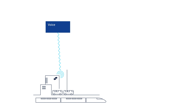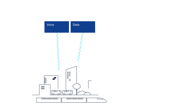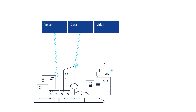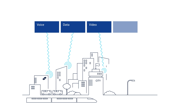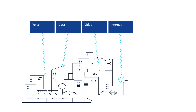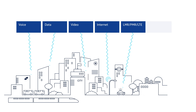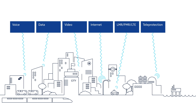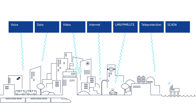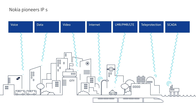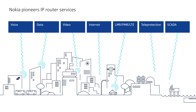As our communication methods have been dominated by data, IP has emerged as the converging layer for all types of network services. At Nokia, we believed our technology could both simplify and support the growth of this new data-rich world, and were the first to design IP routers specifically for reliable delivery of services.